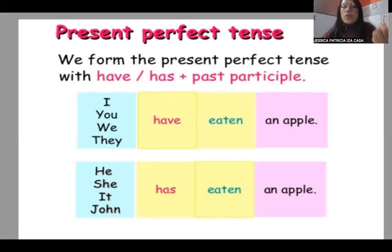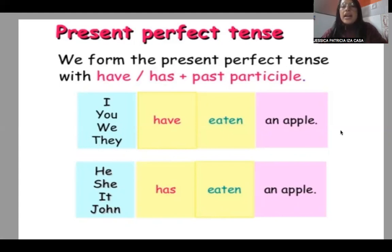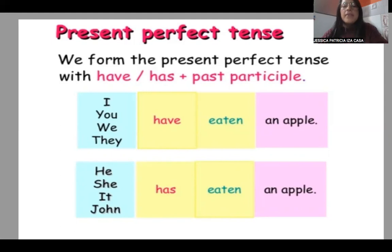It is very important: you have to use the verb in past participle — the third column. For example, 'eat' becomes 'eaten' in present perfect. So: 'I have eaten an apple,' 'we have eaten an apple,' 'they have eaten an apple.' With the third person: 'he/she has eaten an apple.' The difference depends on the subject — use 'has' or 'have' and the verb in past participle.